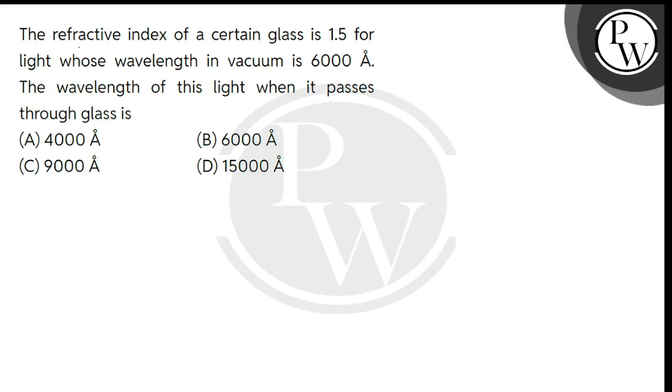Hello bachyo, let's read the question. The refractive index of a certain glass is 1.5 for light whose wavelength in vacuum is 6000 angstrom. The wavelength of this light when it passes through glass is?